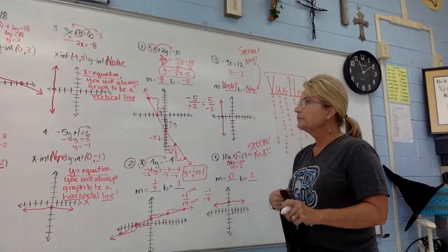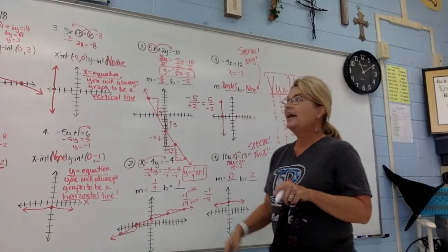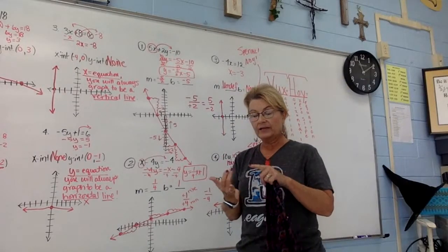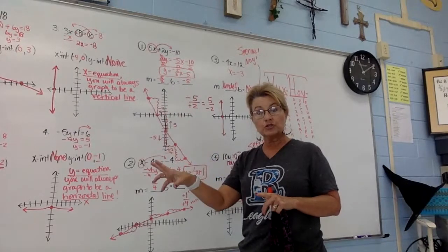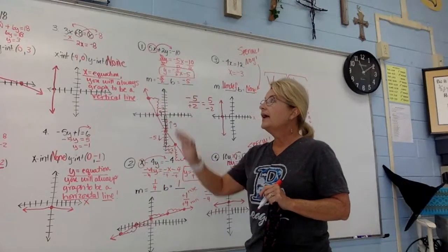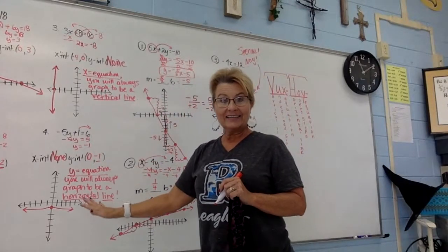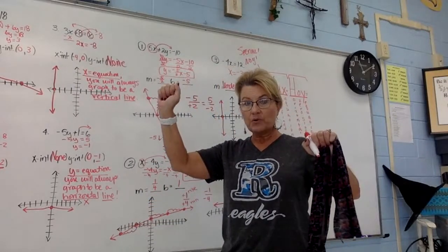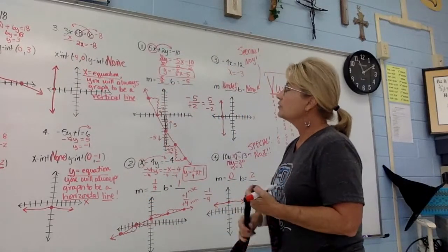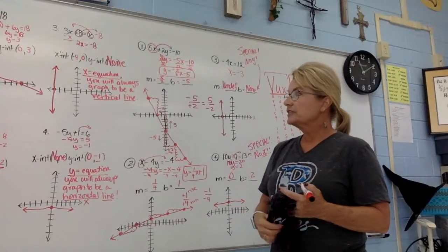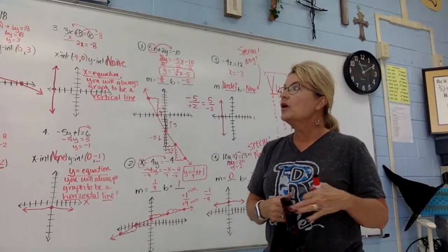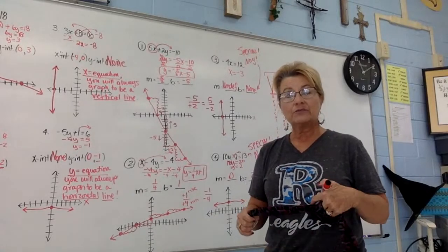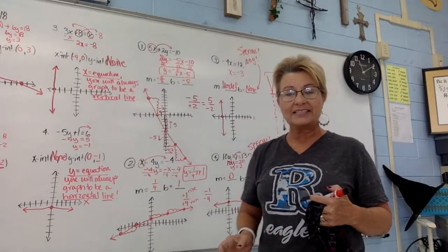To summarize: we learned how to find slope using the formula, how to find slope from a graph using rise and run, how to graph a line using x-intercept and y-intercept points, and how to graph by putting an equation in slope-intercept form. Now practice these through the lab and let's see if you get mastery.